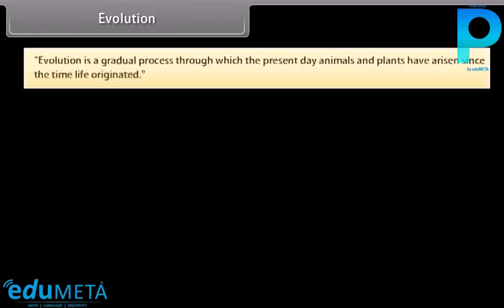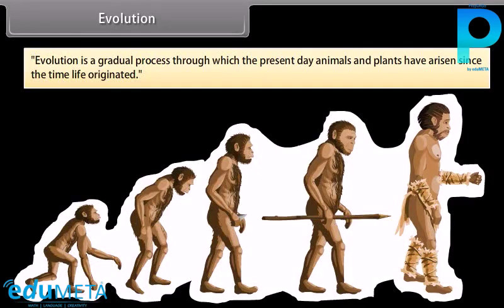Evolution is a gradual process through which the present-day animals and plants have arisen since the time life originated.